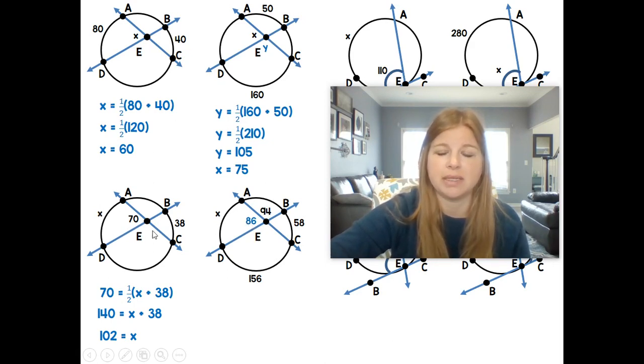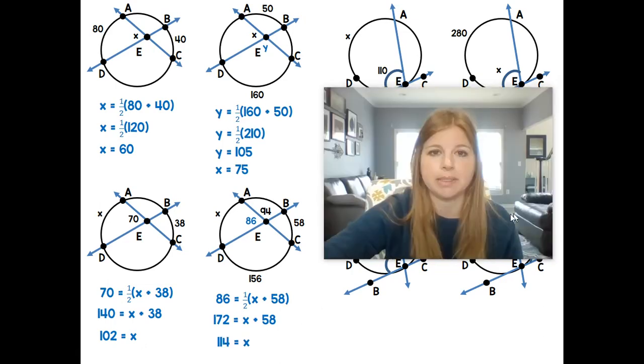And then I could do the same thing that I just did over here. So 86 is equal to one half of X plus 58. That means 172 is equal to X plus 58 if I multiply both sides by 2. And X equals 114. Pretty simple.